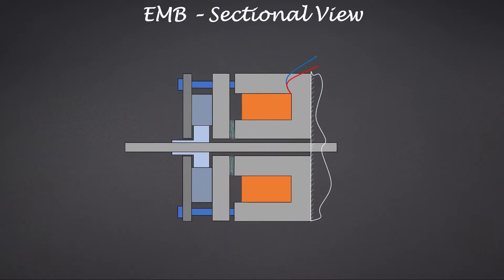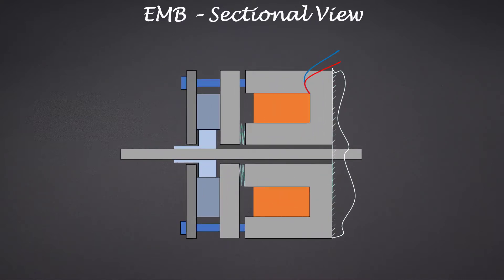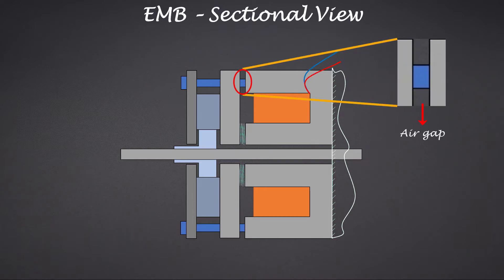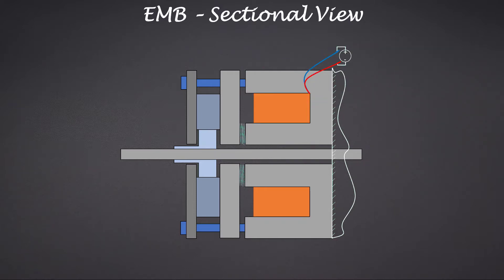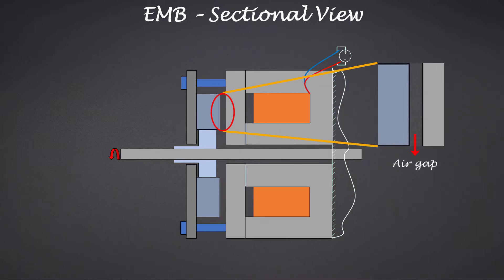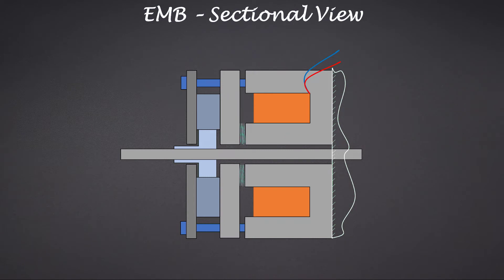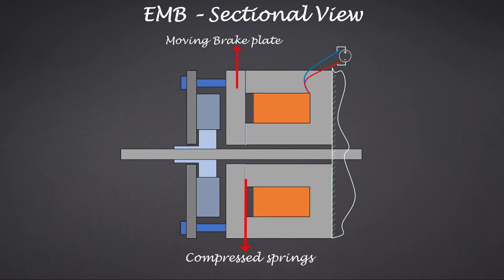When the actuator is de-energized, the EM brake holds the shaft in place through the spring force. When the actuator is energized, the brake plate gets pulled backwards against the spring force and the shaft is released, allowing the shaft to rotate and move the door. Our interest here is to simulate the electromagnetic system that can produce enough force on the movable brake plate to pull it back, overcoming the spring force.